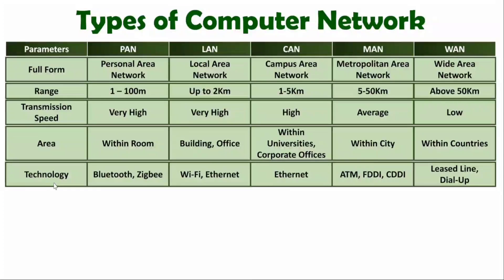When it comes to technology, Personal Area Network can be established using Bluetooth and Zigbee. Local Area Network can be established using Wi-Fi and Ethernet. Campus Area Network uses Ethernet technology. Metropolitan Area Network can be established using ATM — Asynchronous Transfer Mode, FDDI — Fiber Distributed Data Interface, and CDDI — Copper Distributed Data Interface. Wide Area Network is established using technologies based on leased line and dial-up.